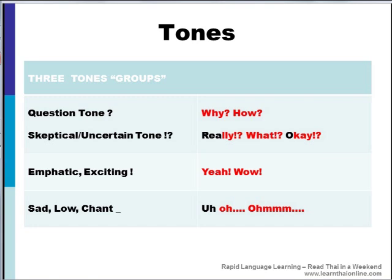In the rapid method, there are really only three groups of tones. The first group over here are these two question tones. The first tone is what I call a full question — Why? How? So if you have a word with a question tone in Thai, then all you have to do is mimic that sound.